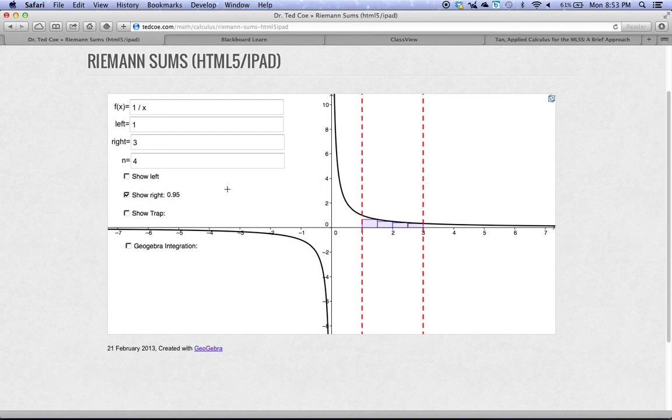For our activity here, though, for problem 15, we just want to show the right-hand rectangles with the right-hand endpoint. And the value is 0.95.